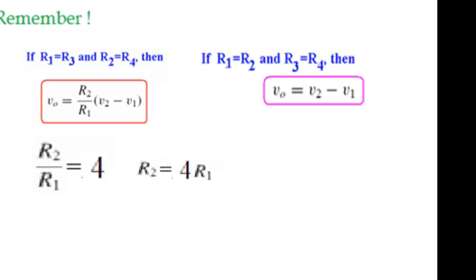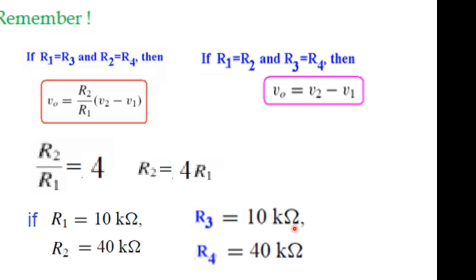we will use this formula and we equate R2 over R1 equal to 4. This is the gain. And from here, we can write R2 to be equal to 4R1. And by assuming R1 to be 10 kilo, we can say that R2 is 40 kilo. Also, since R1 is equal to R3 and R2 is equal to R4, therefore, R3 is 10 kilo and R4 is 40 kilo.